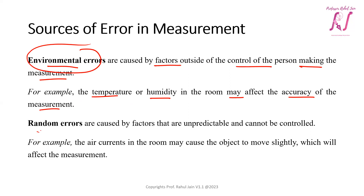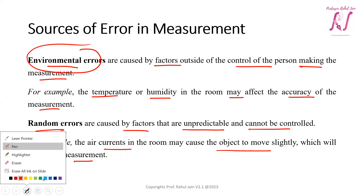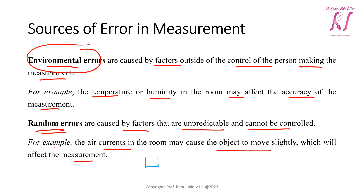Random errors are caused by factors that are unpredictable and cannot be controlled. For example, air currents in the room may cause objects to move slightly, affecting the measurement. If you are weighing something on a weighing machine and there is air pressure from a fan, it may affect the weight reading, causing random errors.